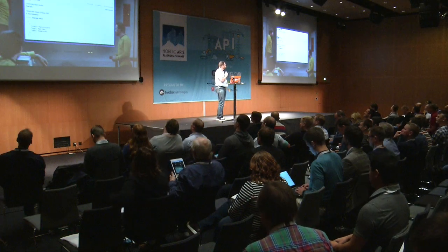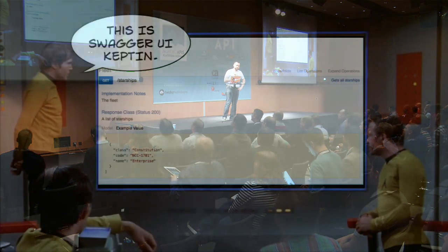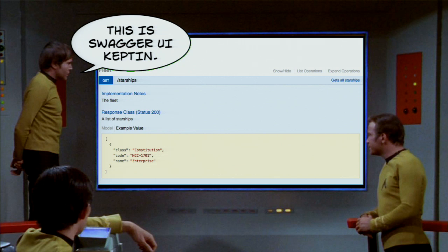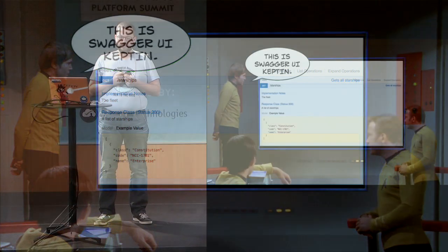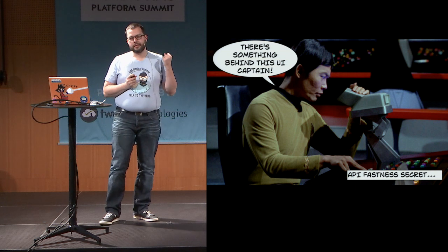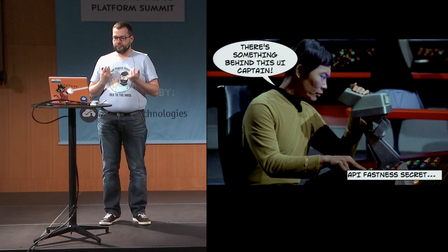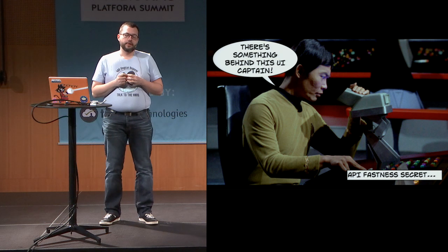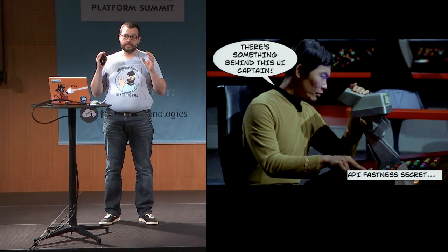Have you ever heard about the Open API Initiative or the Open API Specification? Not so many people. Well, if you don't, you probably already have seen such a thing. This is Swagger UI — this is an API documentation tool. And for many people, it's only documentation generated from your code, and for many people, it's an end in itself. These people are making a terrible mistake. I made it myself too.